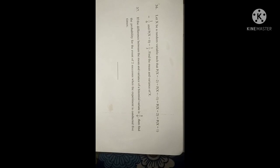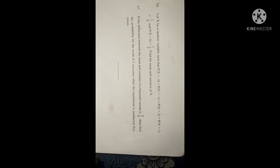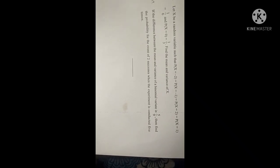Question 36: Let X be a random variable such that P(X = -2) = P(X = -1) = P(X = 2) = P(X = 1) = 1/6 and P(X = 0) = 1/3. Find the mean and variance of X. Question 37: If the difference between the mean and variance of binomial variance is 5/9, find the probability for the event of two successes when experiment is conducted five times. So friends, this is the model paper.